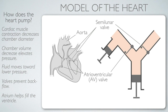In summary, how does the heart pump? Cardiac muscle contracts, decreasing chamber diameter and elevating pressure. Fluid moves toward lower pressure. Valves also open toward lower pressure, and their backstops prevent backflow. The atria function to help fill the ventricles.